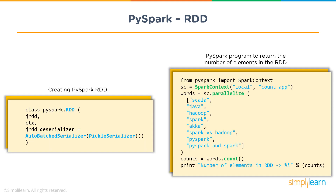A simple PySpark RDD example: using class pyspark.RDD with j_rdd, context, and serializer parameters. To return the number of elements in an RDD, create a SparkContext, use sc.parallelize() on a collection of words, then call count() as an action which gives you the result — this is then printed out.